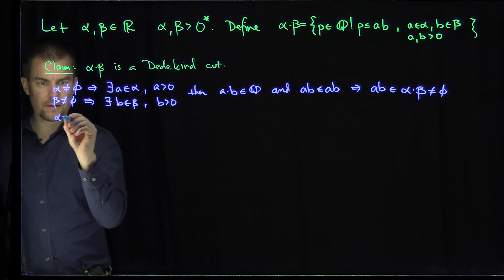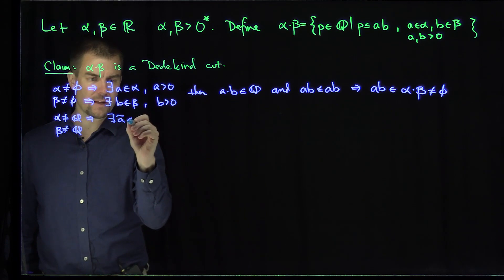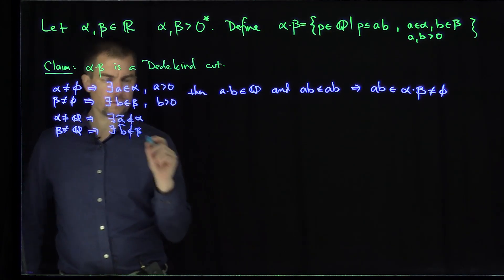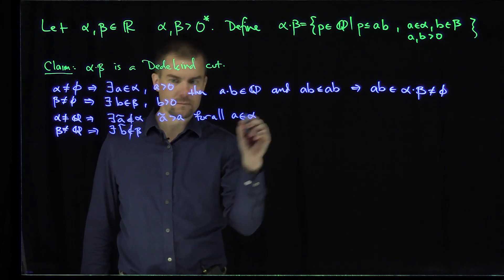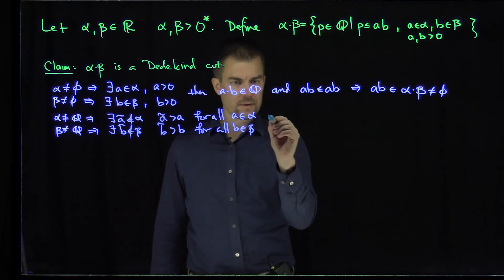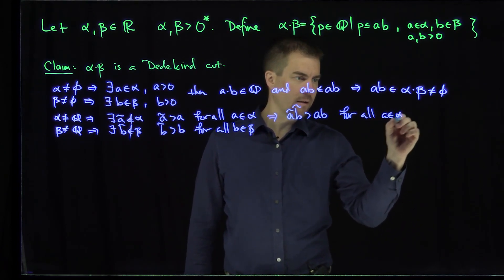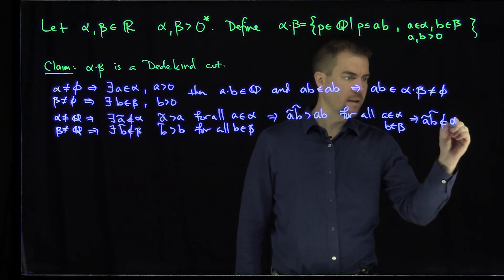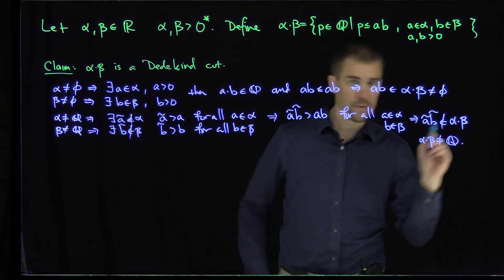Likewise, since alpha is not equal to Q and beta is not equal to Q, there exists an A-tilde not in alpha — in particular, larger than everything in alpha — and there exists a B-tilde not in beta. So A-tilde is bigger than A for all A in alpha, and B-tilde is bigger than B for all B in beta. Therefore A-tilde times B-tilde is larger than A times B for all A in alpha and B in beta, which implies A-tilde B-tilde cannot be in this cut. So alpha dot beta is not all of Q. That's the first property of Dedekind cuts.